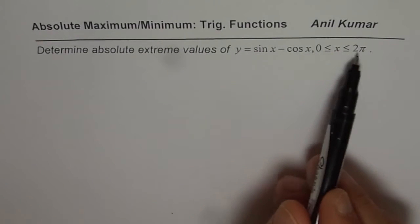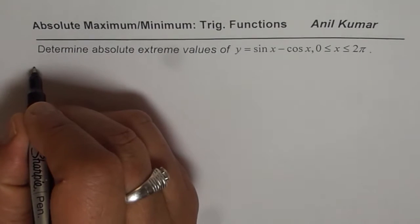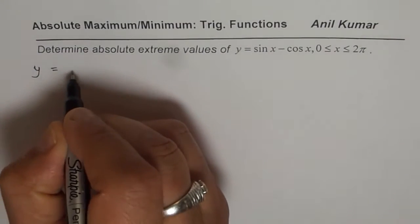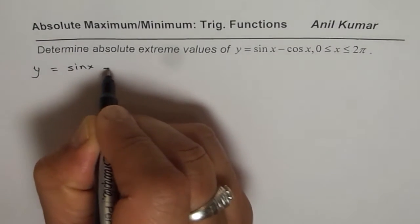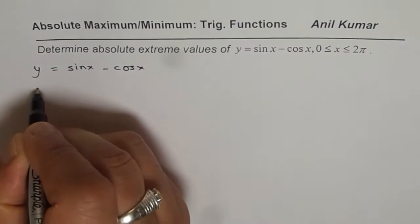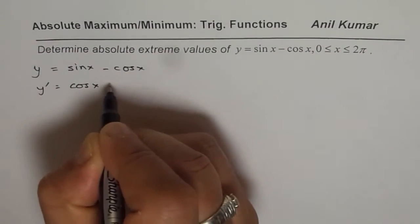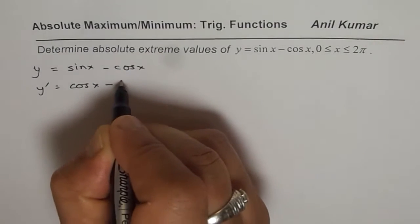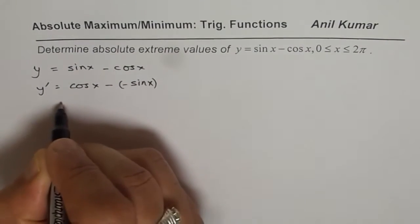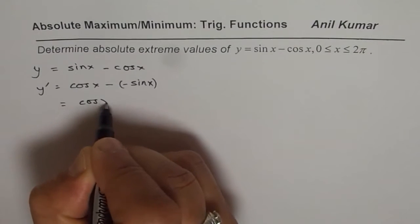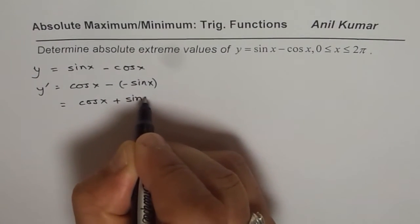We are given boundary conditions. So let us begin by finding the critical number. For y equals sin x minus cos x, the derivative is cos x minus of minus sin x, and that gives us cos x plus sin x.